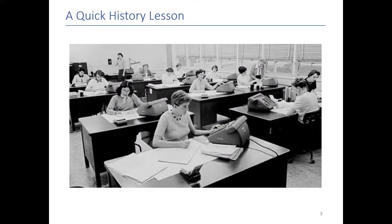To get us started, let's do a quick stroll down memory lane. In the early days of the NASA space program, NASA needed to do a lot of math. They had to calculate orbits, launch trajectories, and engineering loads on the rockets themselves, and they obviously didn't have computers to do that. So they hired people to do the math and double-check it. This picture shows what you could call the first human computers. There's actually an interesting movie, Hidden Figures, about how many of those calculators were actually minorities — an interesting part of American history.